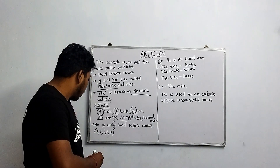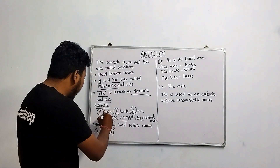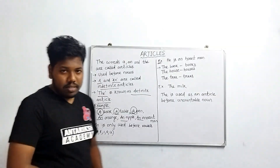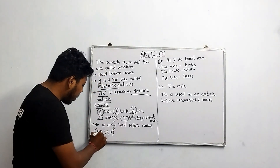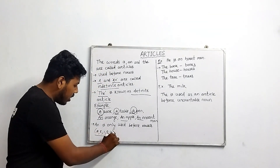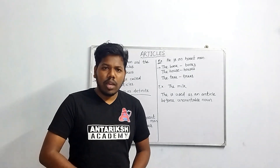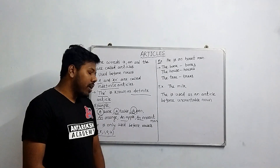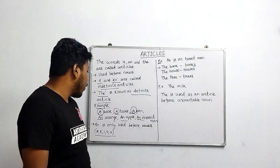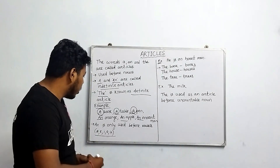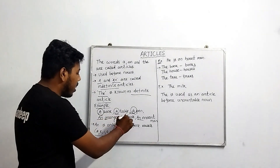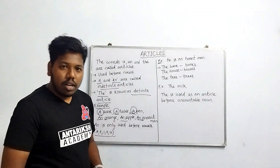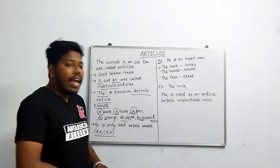So why is there a difference between 'a' and 'an'? 'An' is only used before vowels. The vowels are a, e, i, o, u. That is why we say 'a book', 'a table', 'a pen' — because those words start with consonants — and 'an orange', 'an apple', 'an innocent man' — because those words start with vowels.